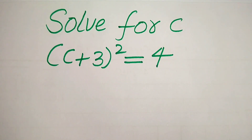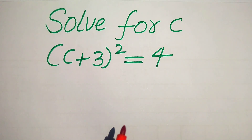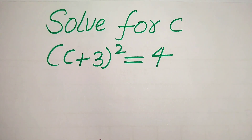Hello everyone. How to solve this problem for the values of c, if we have (c + 3)² = 4. We solve this problem for all the values of c, and at the end we will check which values of c are solutions of this equation and which are extraneous roots.